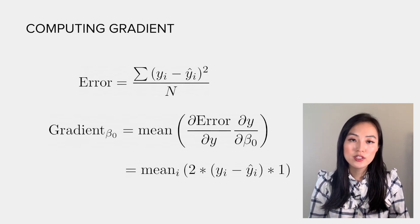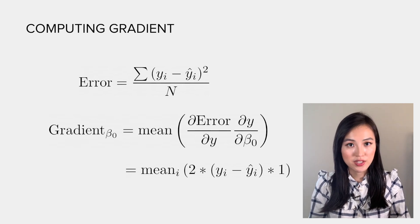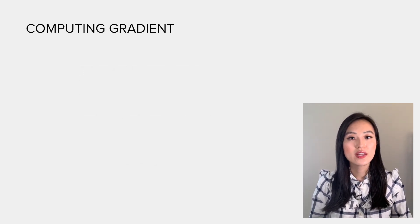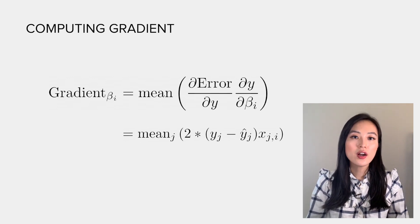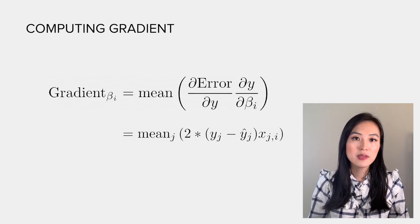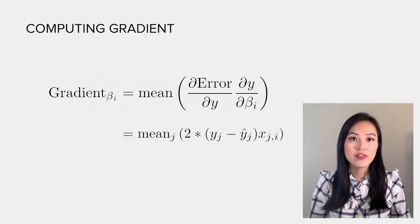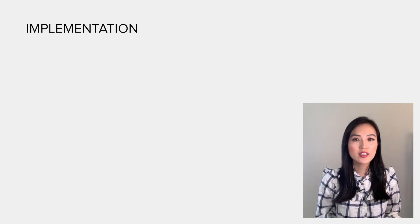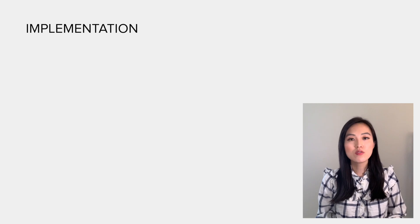We know that the derivative of y with respect to beta_0 is 1. Similarly, we can get the gradients for other betas. Here I use beta_i to represent any beta other than beta_0, and they all have the same form.